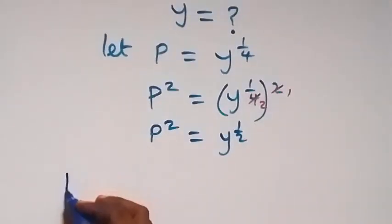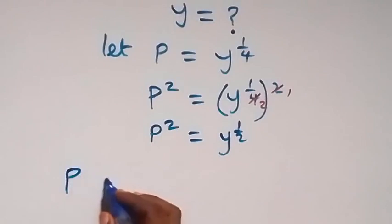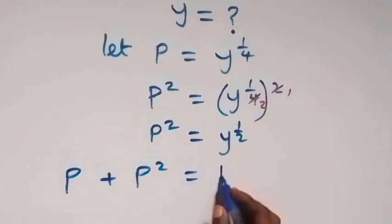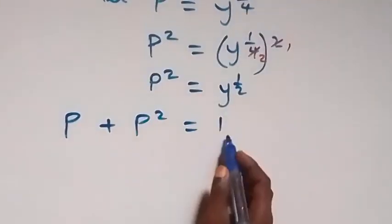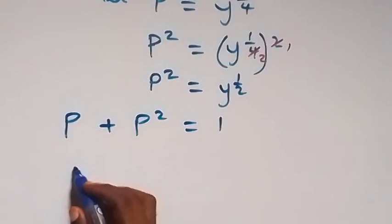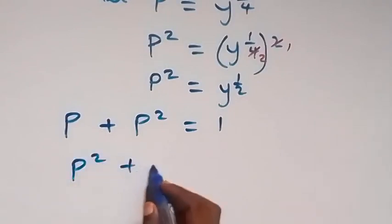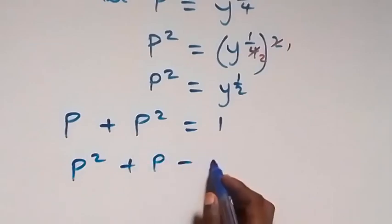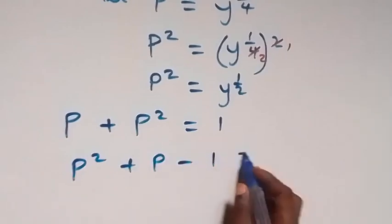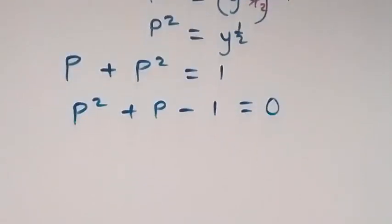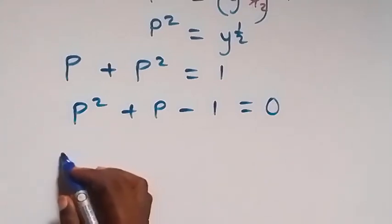So we have p plus p squared equals to 1. Let's rearrange and take 1 to this side. This becomes p squared plus p minus 1 equals to 0. And we have a quadratic equation here which we can solve.